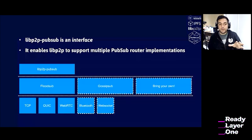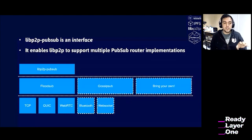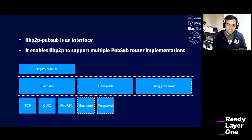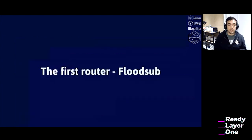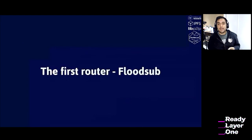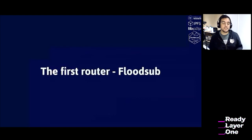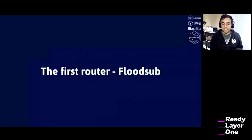The way libp2p works is it's very modular, so even the router is not dependent on the transport. You can have GossipSub over TCP or FloodSub over QUIC — you basically pick your building blocks and develop on top. The first router we implemented was FloodSub, the simplest protocol we could come up with that had a really high level of resiliency. It used ambient peer discovery — using things like the IPFS main network DHT to find other peers — and routing was achieved by flooding, hence the name FloodSub.